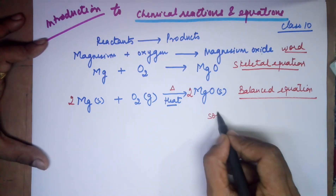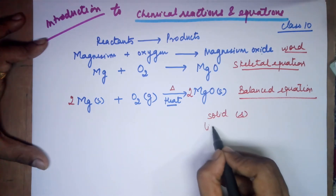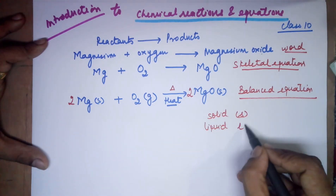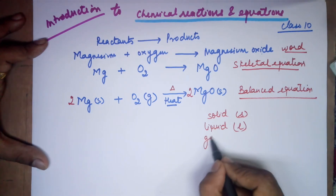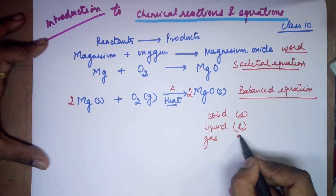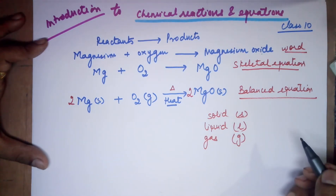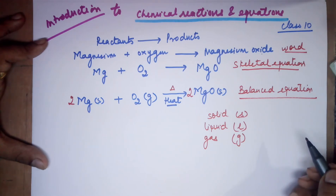For a solid, you write a small (s). For a liquid, you write a small (l). For a gas, you mention (g). These notations apply to the reactants as well as to the products — on the right-hand side as well as on the left-hand side.